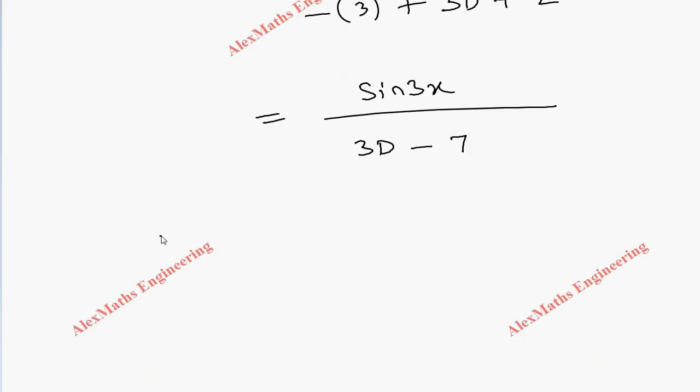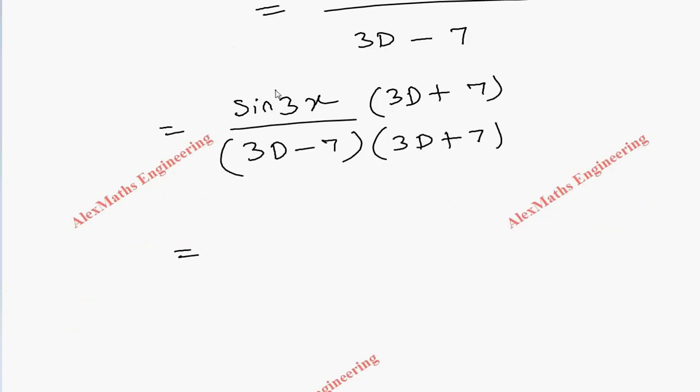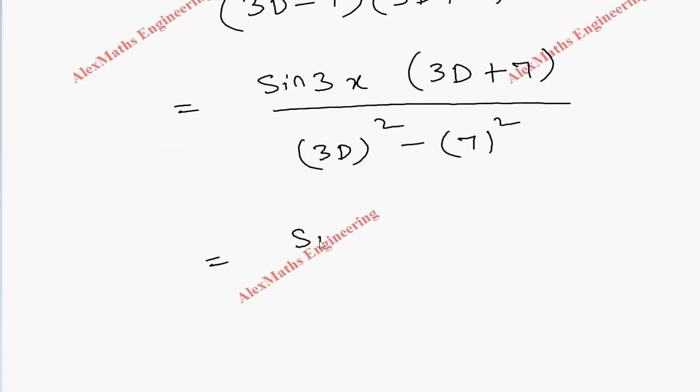Now we have to multiply the conjugate. In the numerator we have sin(3x), and denominator 3D - 7. We multiply by 3D + 7 in both numerator and denominator. The numerator becomes sin(3x)(3D + 7), and the denominator is of the form (a + b)(a - b), so a² - b².